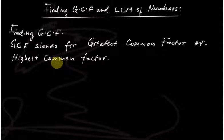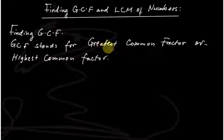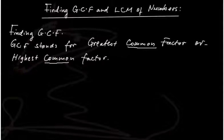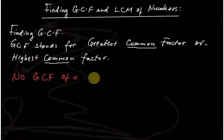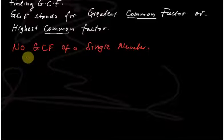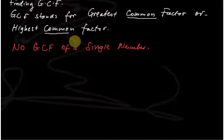Welcome. We are looking at GCF and LCM. GCF stands for Greatest Common Factor, or Highest Common Factor, of a set of numbers. Because of the word 'common,' we don't have a GCF of a single number — we need GCF of two or more numbers. 'Common' means something which is being shared.